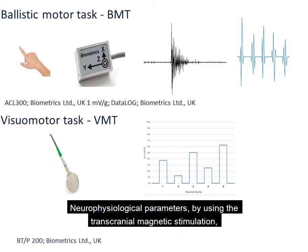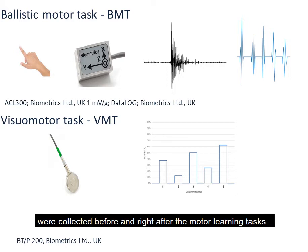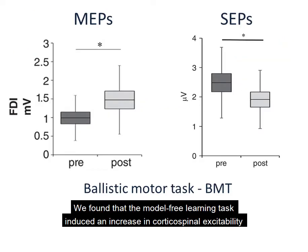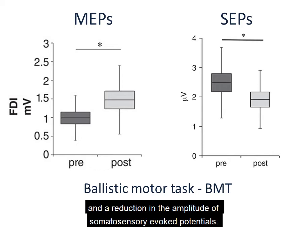Neurophysiological parameters, using transcranial magnetic stimulation, were collected before and right after the motor learning task. We found that the model-free learning task induced an increase in corticospinal excitability and a reduction in the amplitude of the somatosensory evoked potentials.